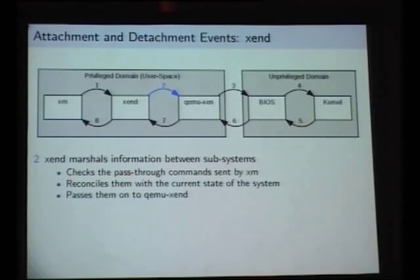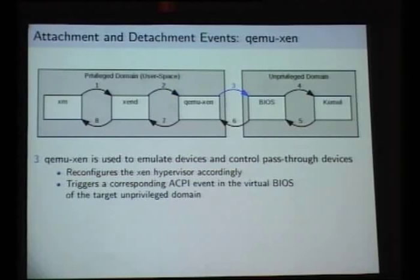So in this case, the most important things it's doing is it receives the commands from XM. It checks the local state of the system as it believes the system exists, makes sure that's all OK, and then passes it on to QEMU Xen. It doesn't really do very much. It just marshals the information, passes it on. So QEMU Xen, this is the part of Xen that emulates devices, and it actually turns out to be the part that controls hot plug or pass-through. So it's QEMU Xen that communicates with the hypervisor and makes the hypervisor set up the IOMMU and things like this so the pass-through is actually going to work.